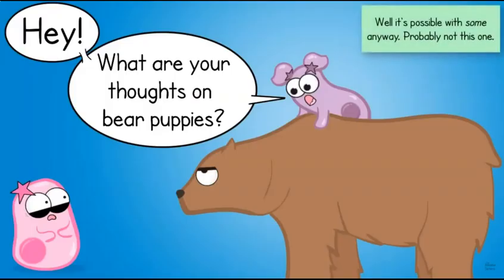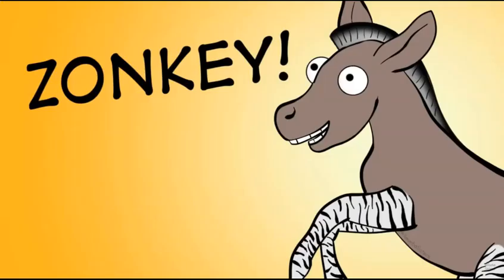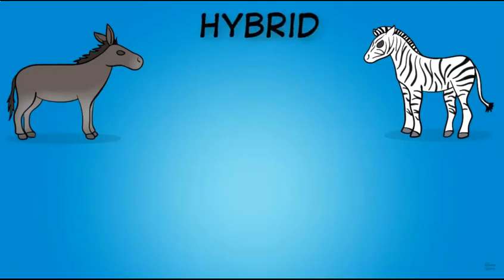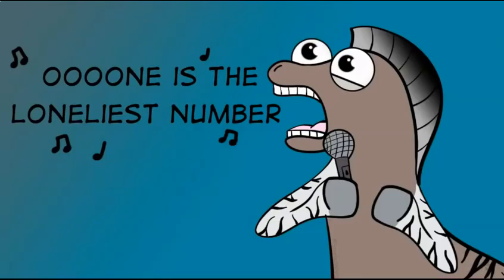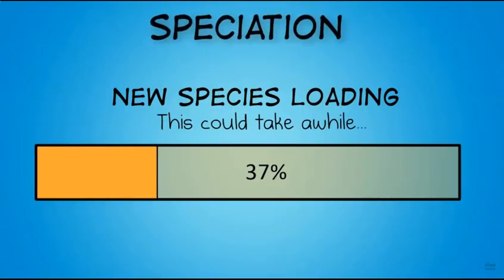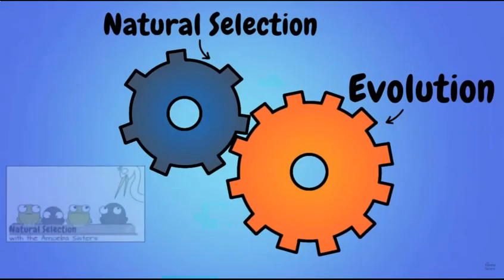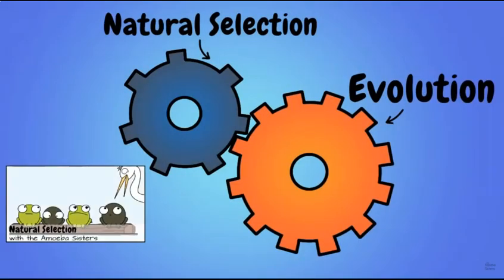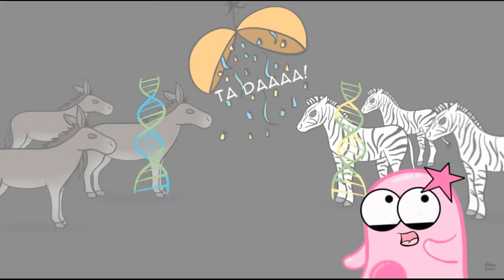Can two different species breed and have offspring? Yes — consider the zonkey, a hybrid between a donkey and a zebra. They typically are going to be sterile, though. So even though the donkey and the zebra had the baby zonkey, that zonkey will not be fertile. Speciation — the development of a new species — can occur when populations are reproductively isolated in some form. Our focus is to see how isolation can happen in the first place, giving rise to speciation. There are two main types: allopatric speciation and sympatric speciation.